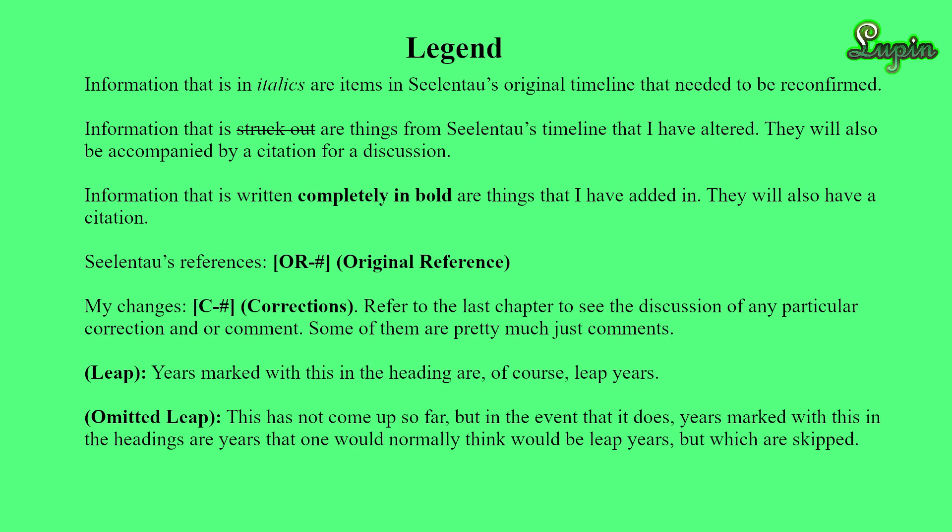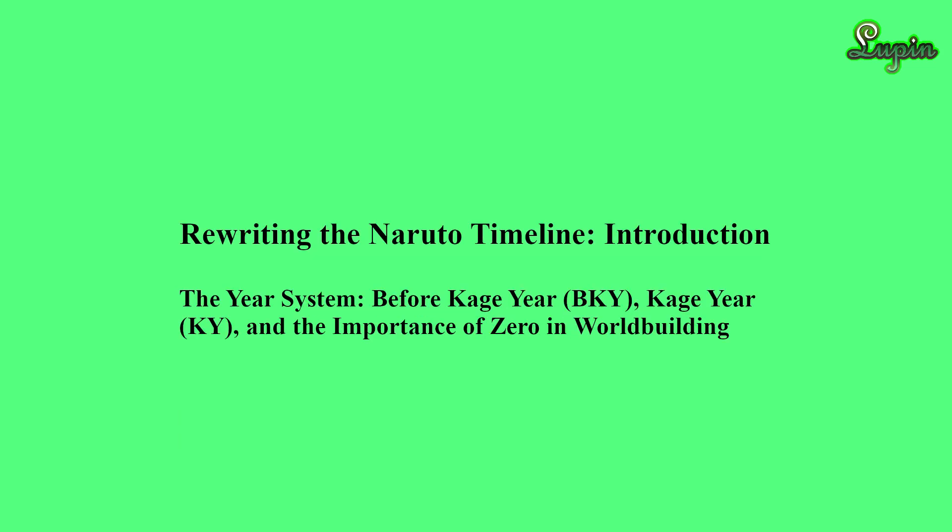Years will be marked with 'leap' or 'omitted leap' in parentheses — well, some of the years. Ones marked with leap are, of course, leap years. Omitted leap years are years that would normally be considered leap years but which are skipped, which I'll get to a little bit further down the line. But for now, the next subject: the year system — Before Kage Year (BKY) and Kage Year (KY) — and the importance of zero in world building.